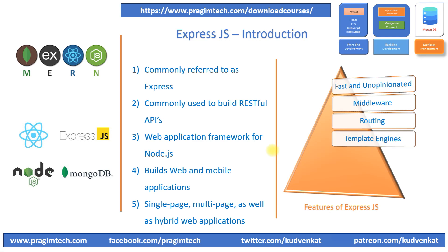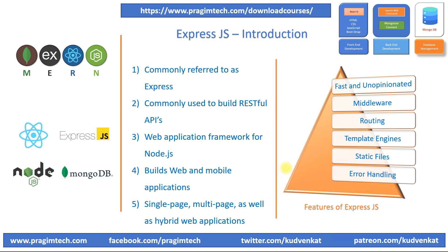ExpressJS supports various template engines like Pug, EJS, and Handlebars, allowing for dynamic content rendering in web pages. Express can serve static files such as images, CSS files, and JavaScript files using the Express static middleware. Express also includes an error handling middleware system that helps manage errors efficiently and send appropriate responses to the client.